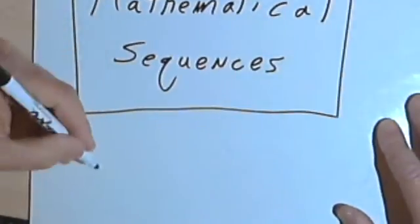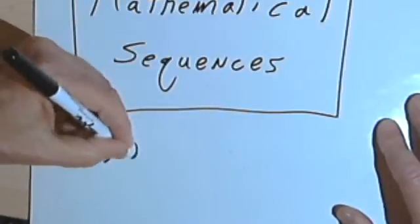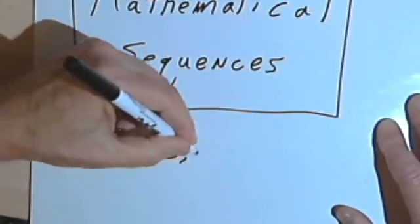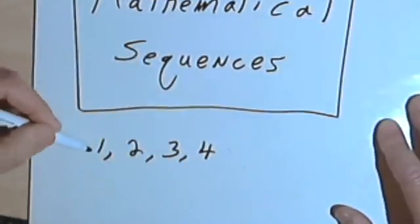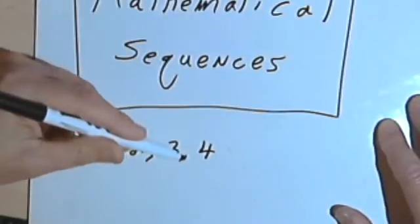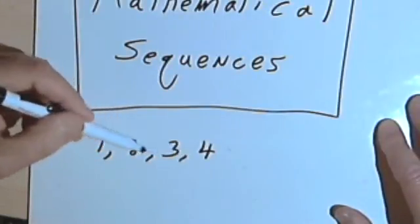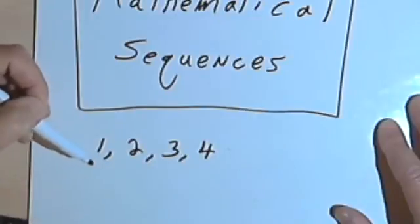So in other words, if I write the list 1, 2, 3, 4, you can see that there's an order to these numbers. They keep increasing by 1. If I'd written 4, 3, 2, 1, that would be a different sequence.